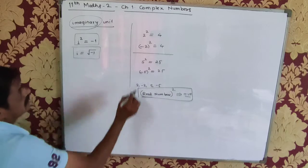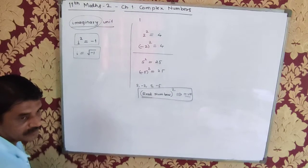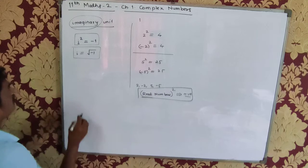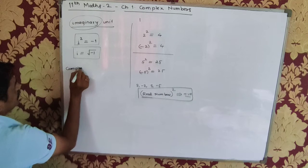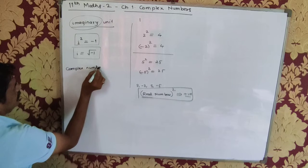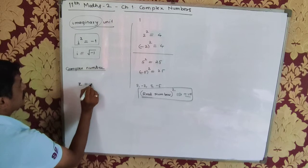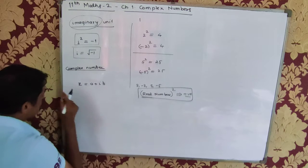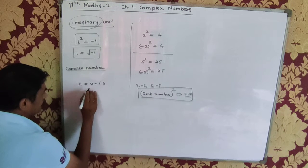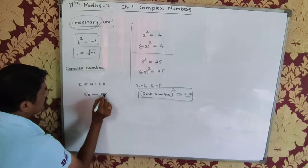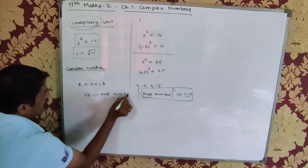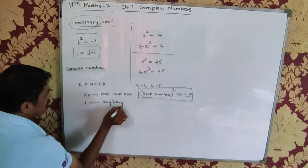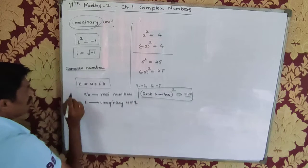Just as all the real numbers start with 1, 2, and so on, in the same way the imaginary numbers or complex numbers start with the imaginary unit. Here comes the definition of complex number. Any complex number, denoted by z, is equal to a + ib or x + iy, where a and b are both real numbers and i is the imaginary unit. Such a number is called a complex number.